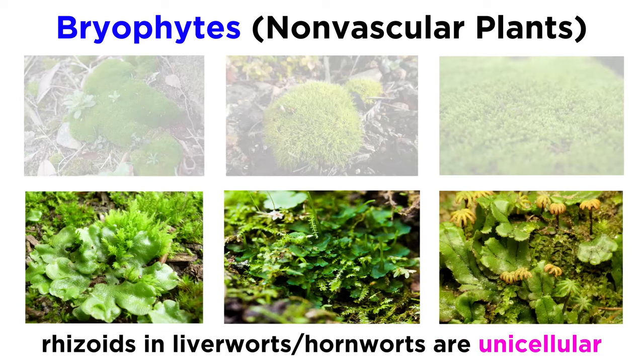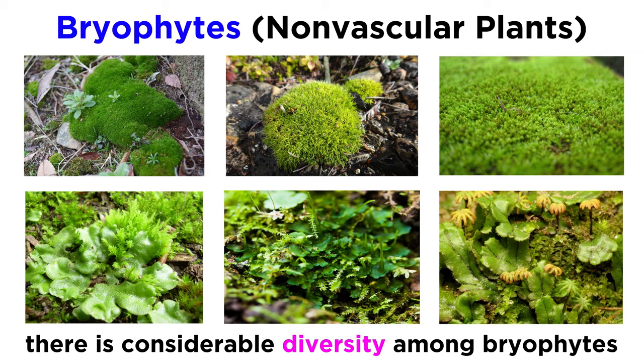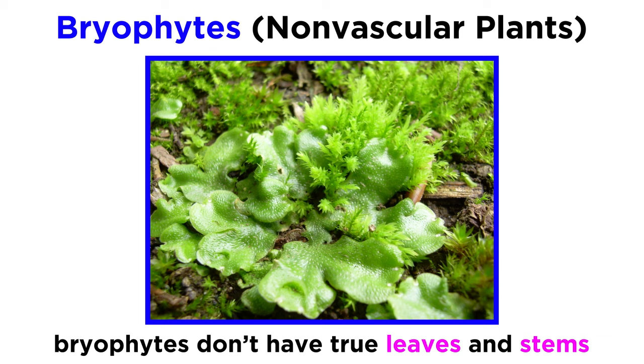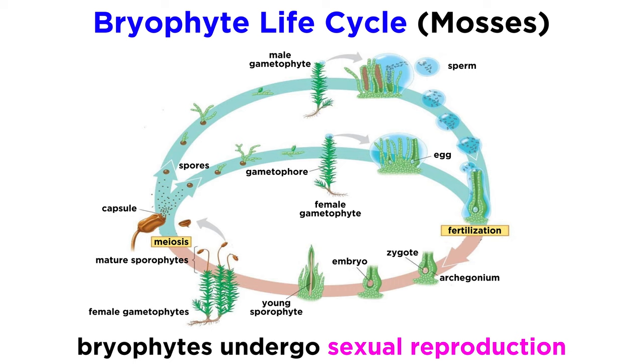For example, the rhizoids in mosses are multicellular, while only unicellular in liverworts and hornworts. Some liverworts are parasitic, while mosses are not. And there are a number of other subtle differences in their structure and organization. Since bryophytes are nonvascular plants, they aren't differentiated into leaves and stems as easily as vascular plants are. Instead, we refer to the body of a bryophyte plant as the thallus.